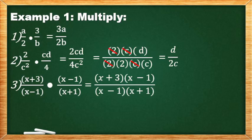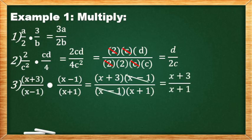Number 3: pagtabihin lang natin ang given na (x+3)/(x−1) times (x−1)/(x+1). Pinagtabi. Pero hindi tinanggal ang parentheses. May nakikita magkaparehas? Yes — yung factor na (x−1) sa numerator at denominator. The final answer is (x+3)/(x+1). You cannot cancel here x, kasi ang buong factor ay x plus 3.